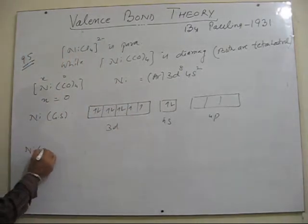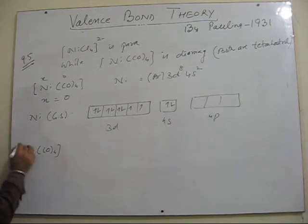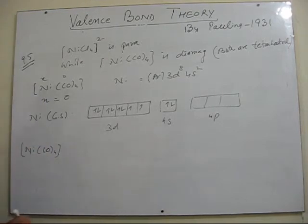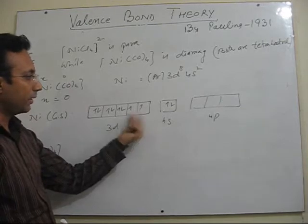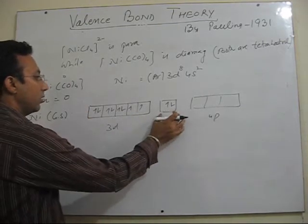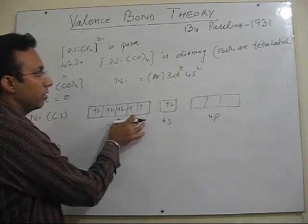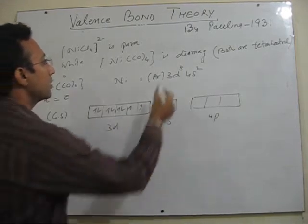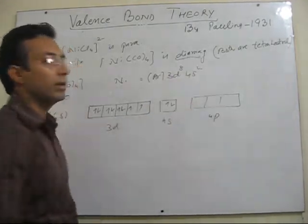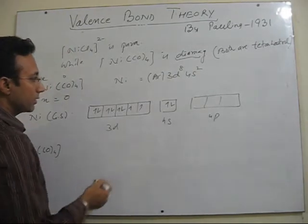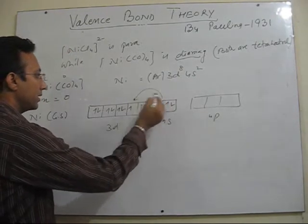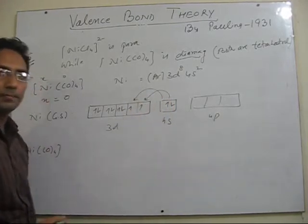Now in order to accommodate four carbon monoxide ligands, nickel have to locate four orbitals here. But you see s is not empty, d's are also not empty. And so what hint is given to us in this question, that this complex is diamagnetic. So the only one thing which is left with us is to pair these s electrons to d.